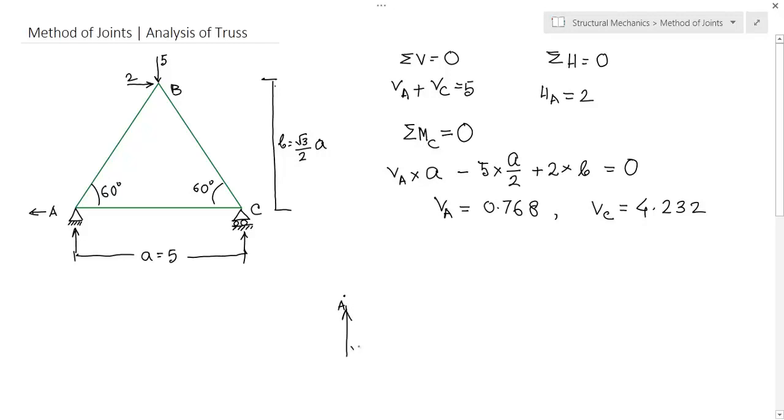In a vertical direction there is VA. In horizontal direction there is HA which is equal to 2 and VA equals to 0.768. Now there are two member forces.